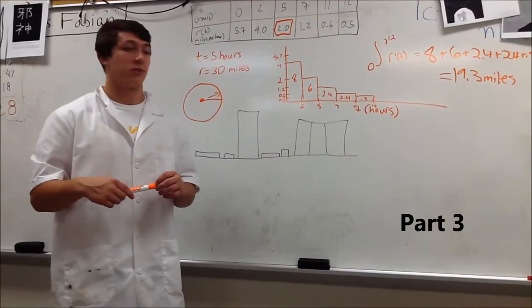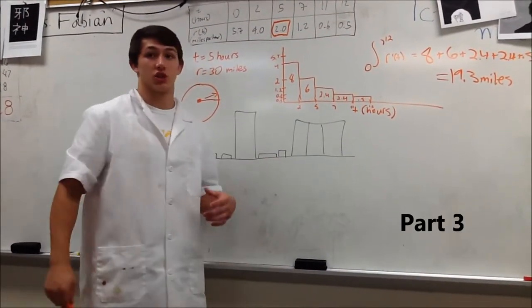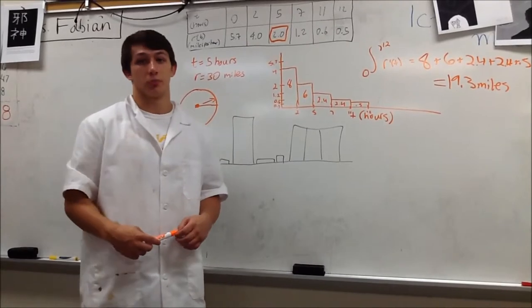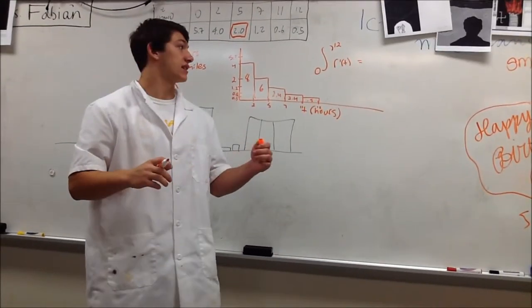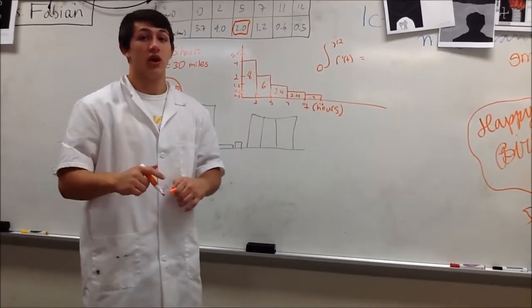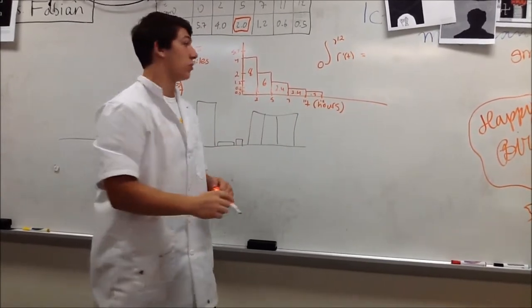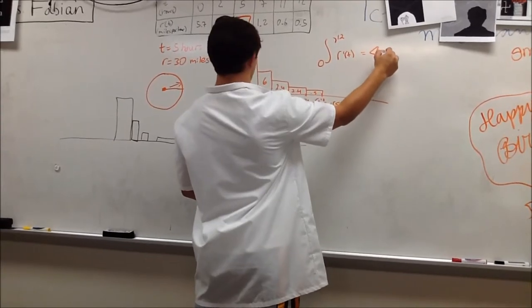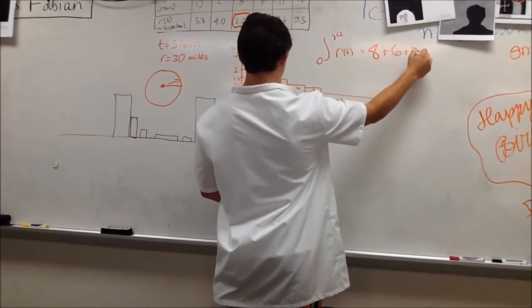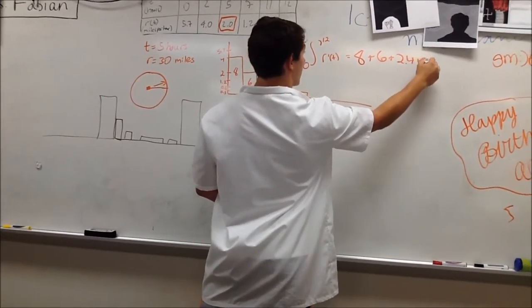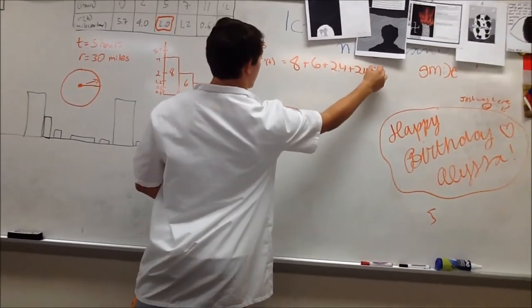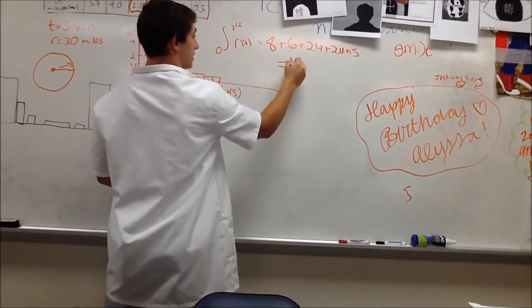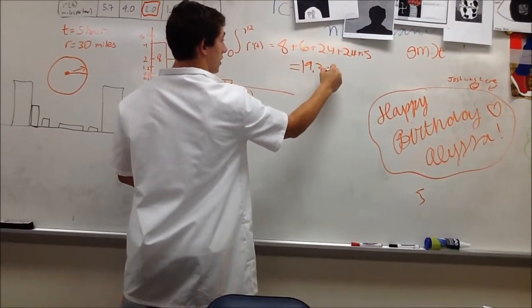We use right Riemann sum to figure out how much the balloon has increased in radius since its initial appearance. In this case, we use an integral from 0 to 12. When using right Riemann sum, we use the areas of each point to figure out how much it has increased. So we use 8 plus 6 plus 2.4 plus 2.4 again, plus 0.5, coming out to 19.3 miles.